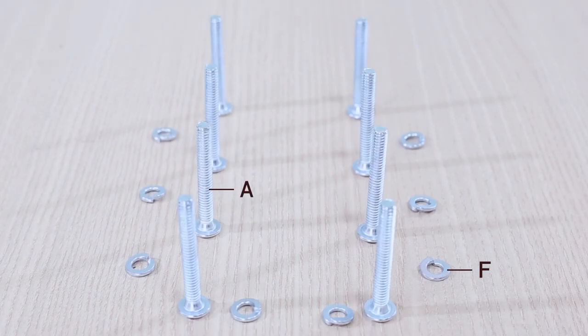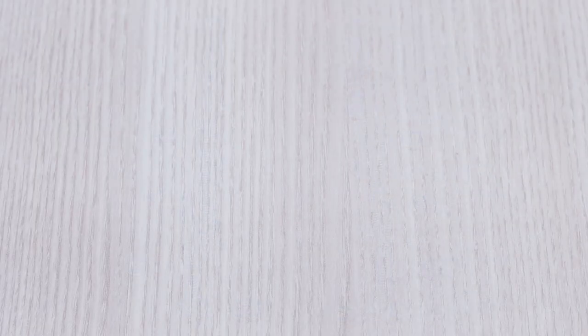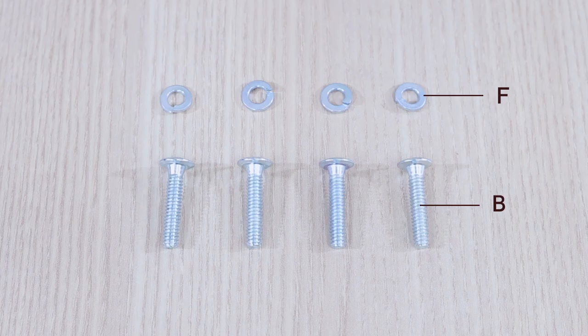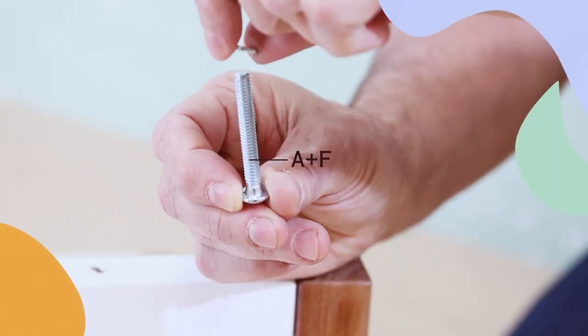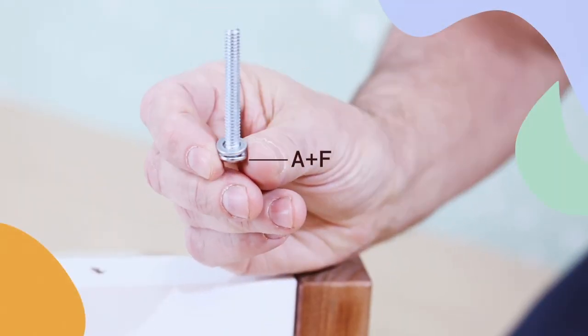Keep in mind that the Full Crib uses all the same hardware as the Mini Crib, so you shouldn't need any additional hardware. Just like with the Mini Crib, remember to pair each bolt with its respective washer.